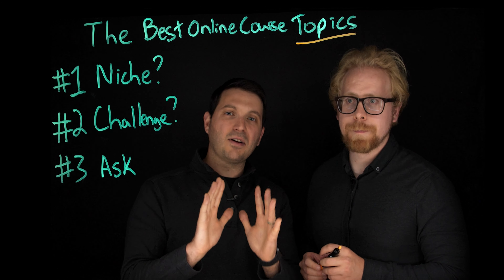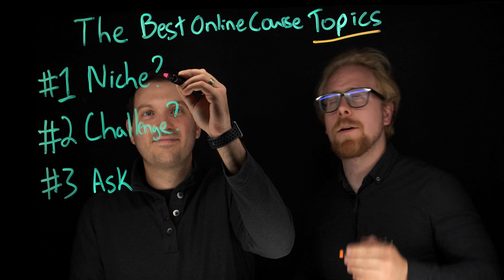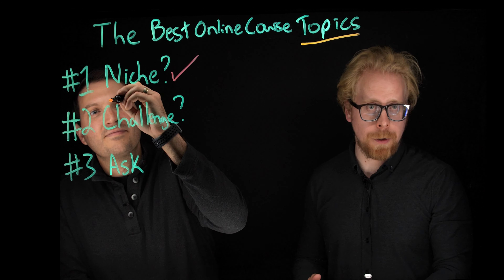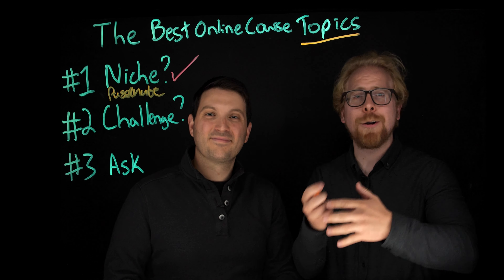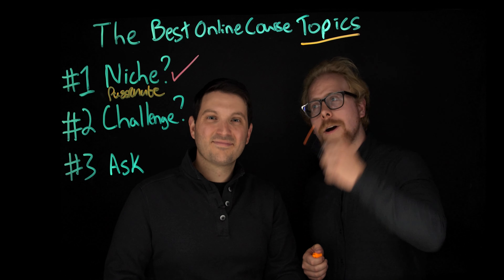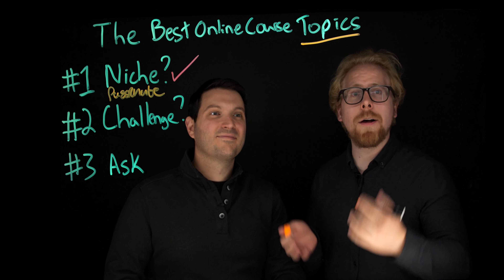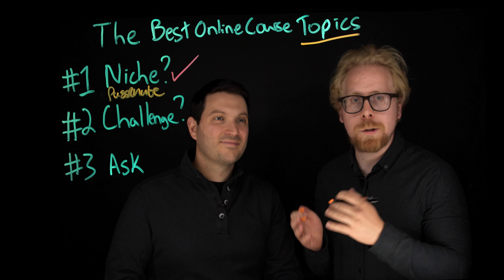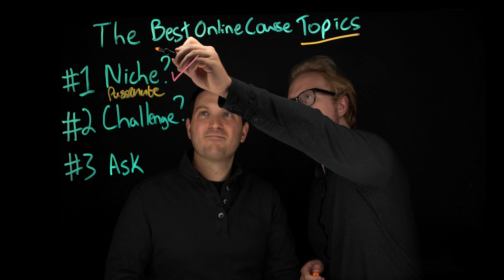There are three key areas. The first step in the process for you to pick the best online course topic is ask yourself: what is your niche, or what are you most passionate about? Because if you create a course about something you're not passionate about, even if it's a course about how to make money, you will not care about that content. You need to love your content. What are you most passionate about in that niche?